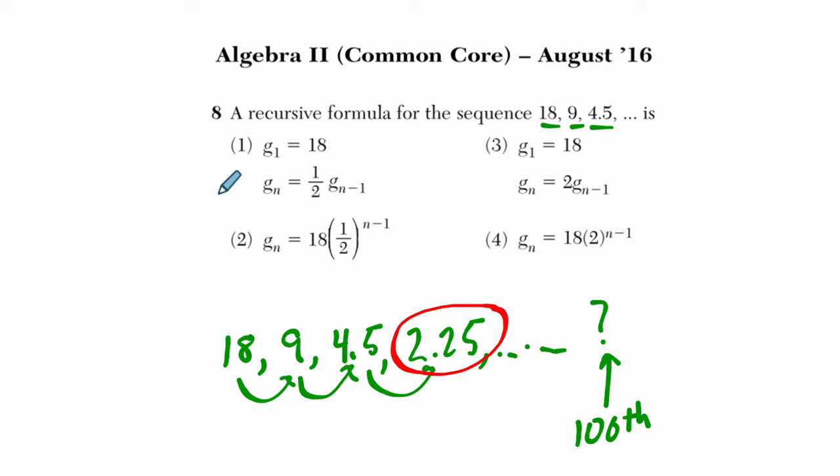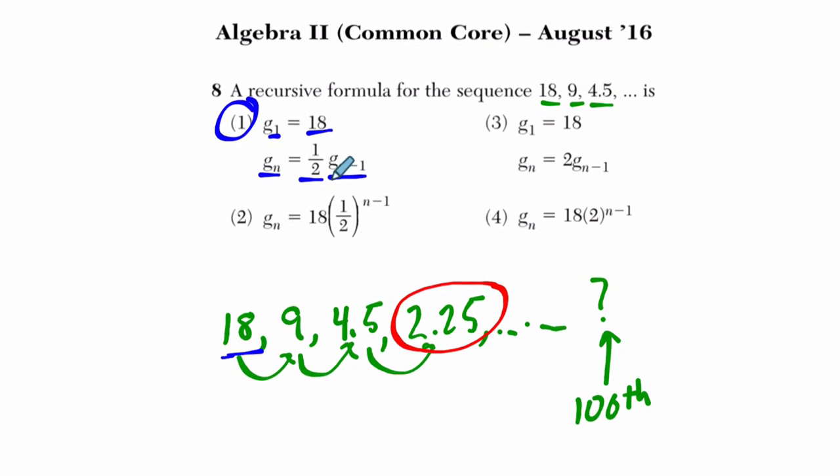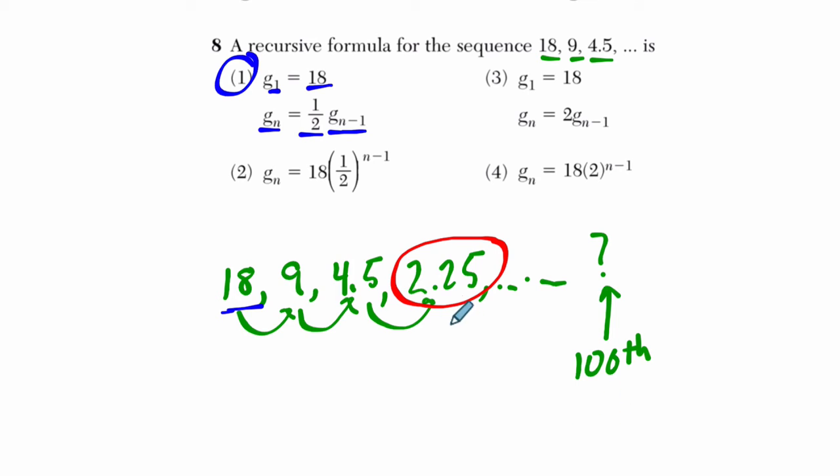But here, the answer is, let's start with answer choice 1. It's recursive. It says that the first step, g sub 1, that's my first step, is 18. Okay, that makes sense. Then any step after that is half of g sub n minus 1.